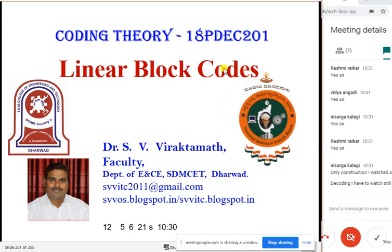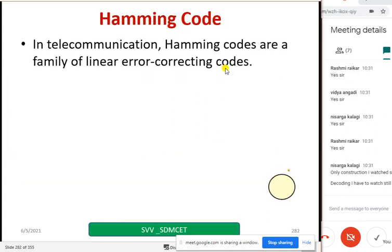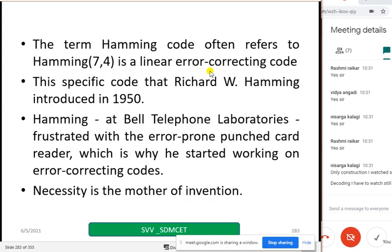In today's class, in telecommunication, the Hamming codes are a family of linear error-correcting codes. When we say Hamming code, by default we take the (7,4) code. The reason is this particular specific code was introduced by Richard Hamming in 1950.